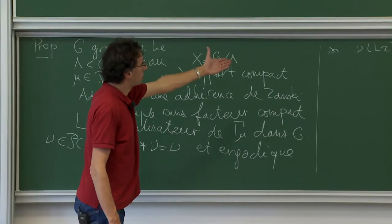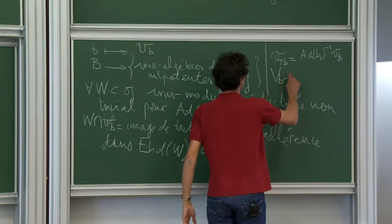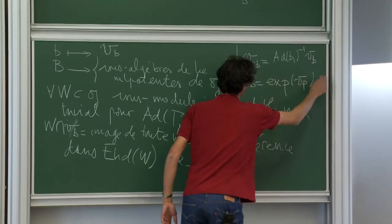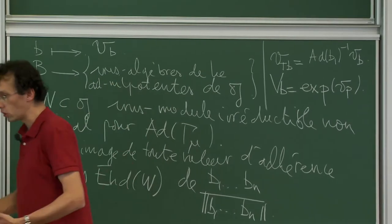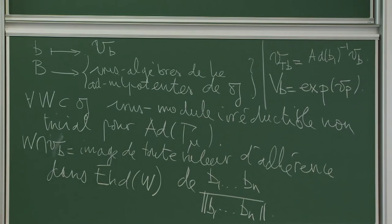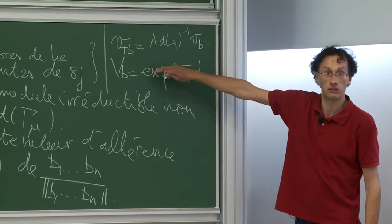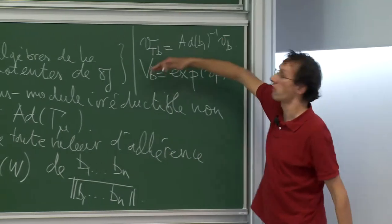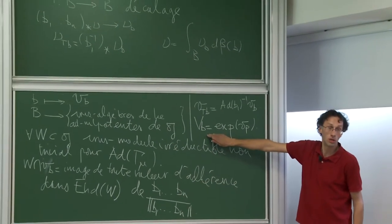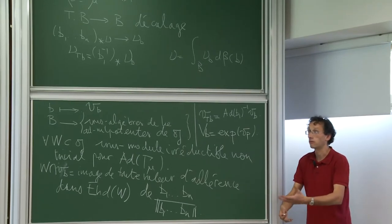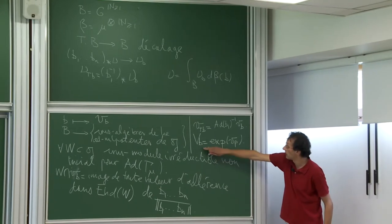Now: I have a nubée ν_B and an ad-nilpotent subalgebra V_B, which gives a subgroup — an ad-unipotent subgroup, exactly the object appearing in Ratner's theory. The ideal would be that ν_B is V_B-invariant. Both ν_B and V_B move equivariantly above B. If ν_B is V_B-equivariant, then by ergodicity of the shift, either ν_B is almost never V_B-invariant, or almost always. I'd like ν_B to be V_B-invariant.